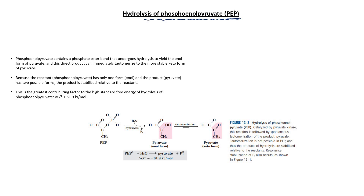Glycolysis is completed in a total of ten steps, and one intermediate is phosphoenol pyruvate. If we talk about the structure of phosphoenol pyruvate, a key feature is that it contains phosphate ester bonds. This phosphate ester is one of the unique features of phosphoenol pyruvate.